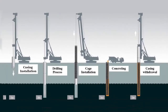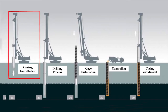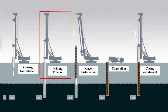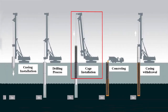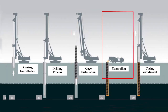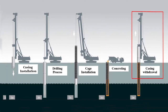These are the main procedures of cast-in-situ bored piling: casing installation, drilling operation, reinforcement cage installation, pile concreting, and finally casing removal.